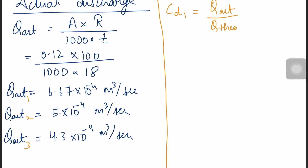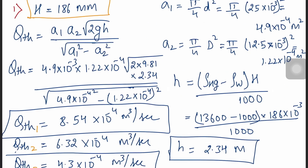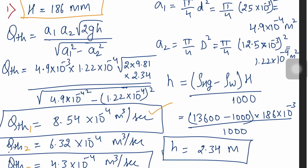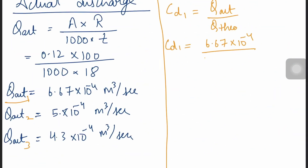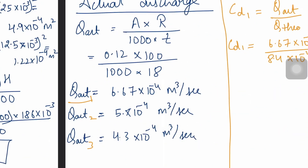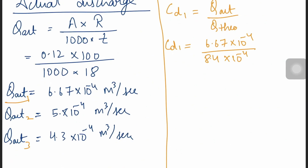CD1 = Q_actual 1 / Q_theoretical 1 = 6.67 × 10⁻⁴ / 8.54 × 10⁻⁴.